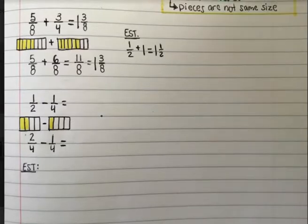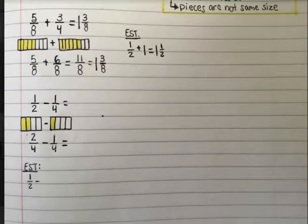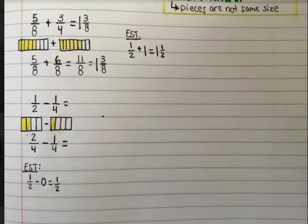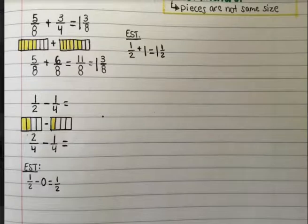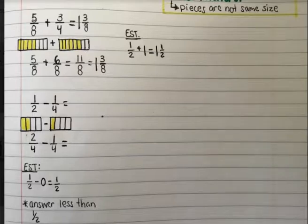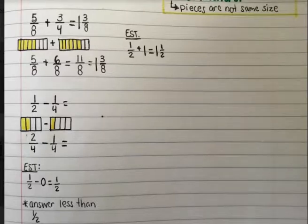Before we do that, we would want to estimate. Two fourths, we know it is one half. And one fourth is halfway between zero and a half, but I would say we could say zero. So we could say our estimate is one half. You could also estimate and say one half minus one half, which is zero. So if I think about that and think about reasonableness, that kind of lets me know that my answer is going to be less than a half.